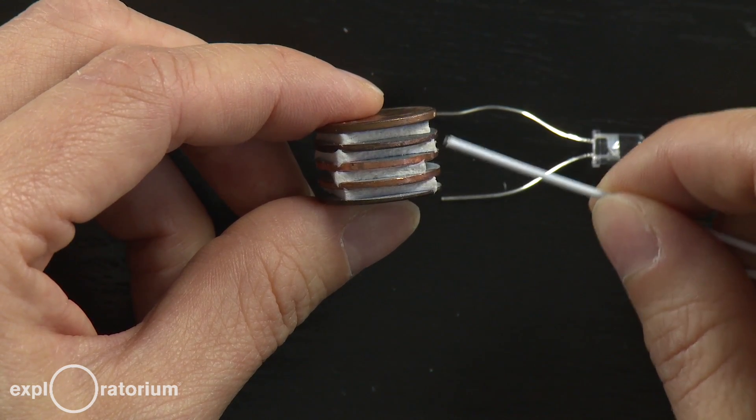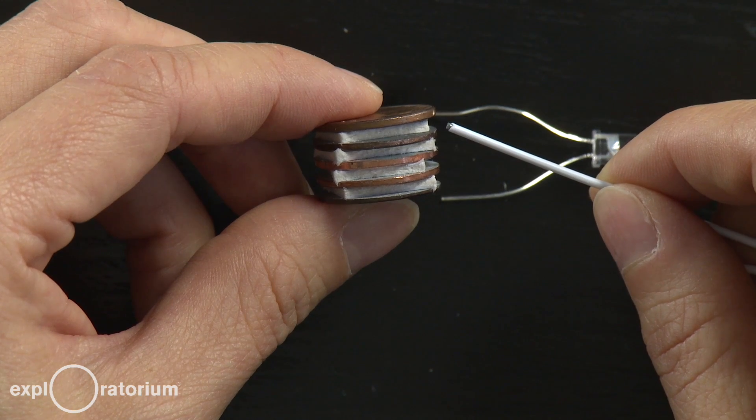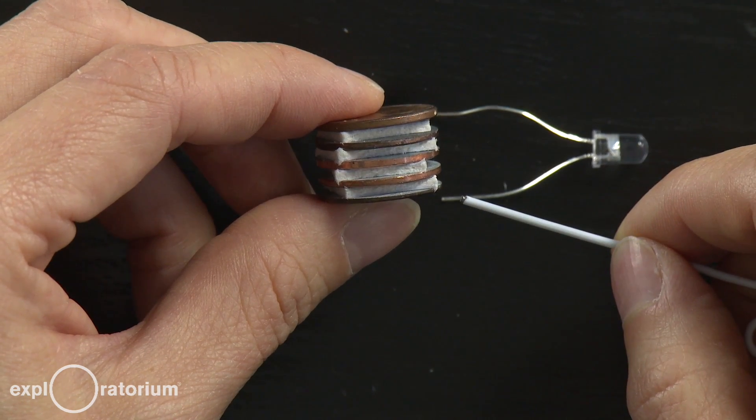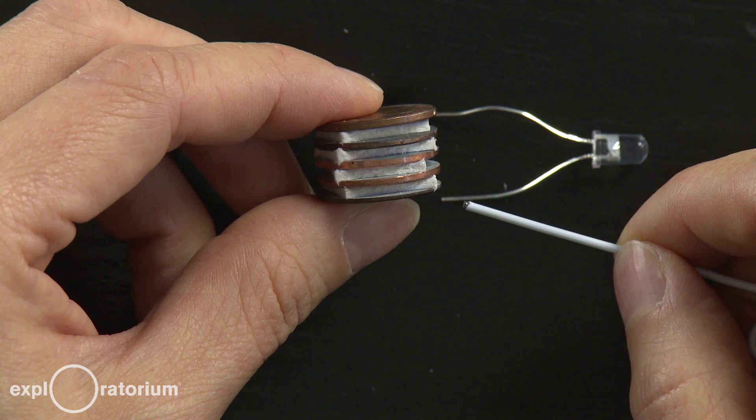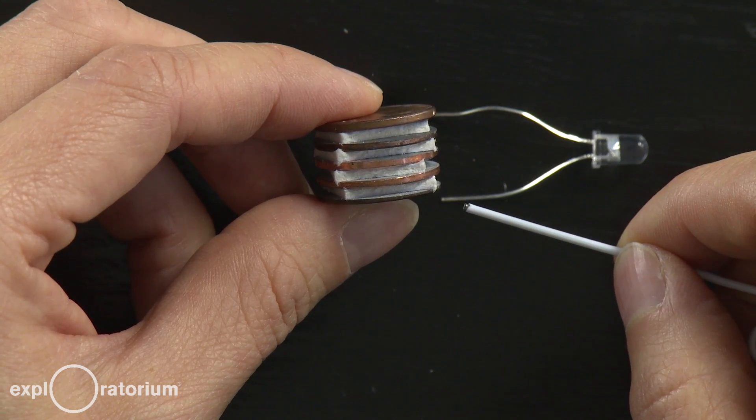In each of these four cells, there are two reactions taking place. One that creates electrons, and one that uses them. And when those electrons flow, that's what we call electricity.